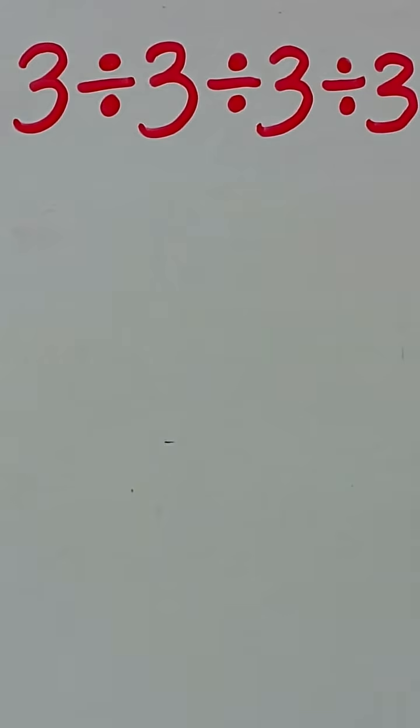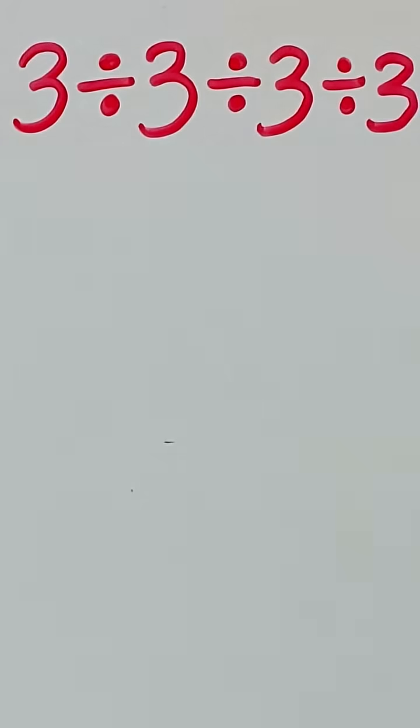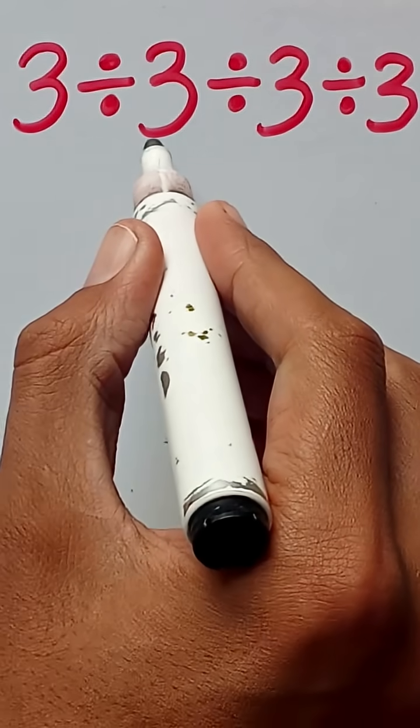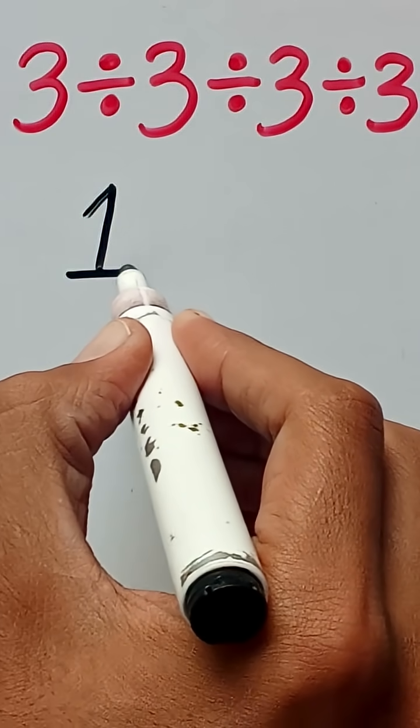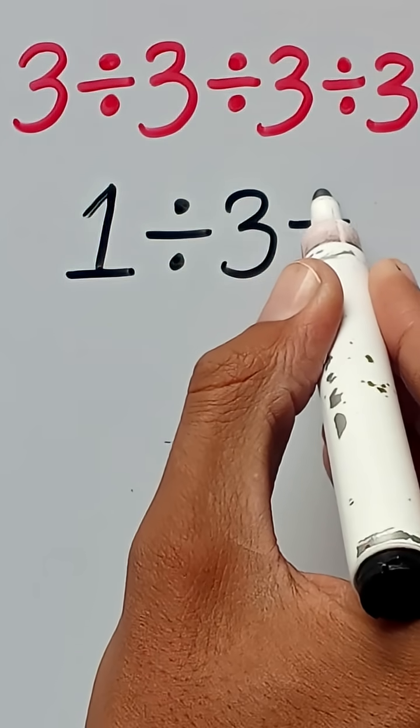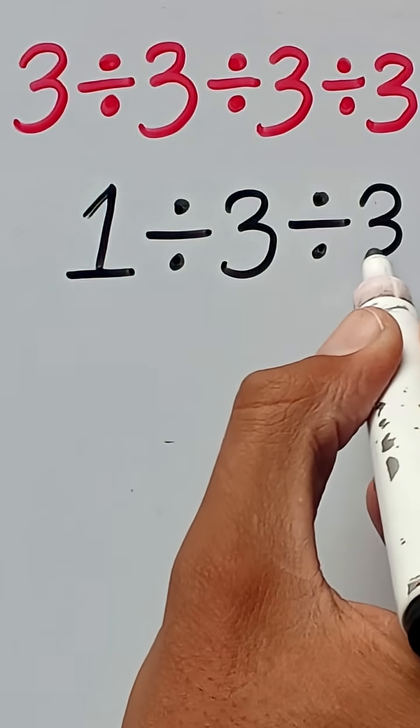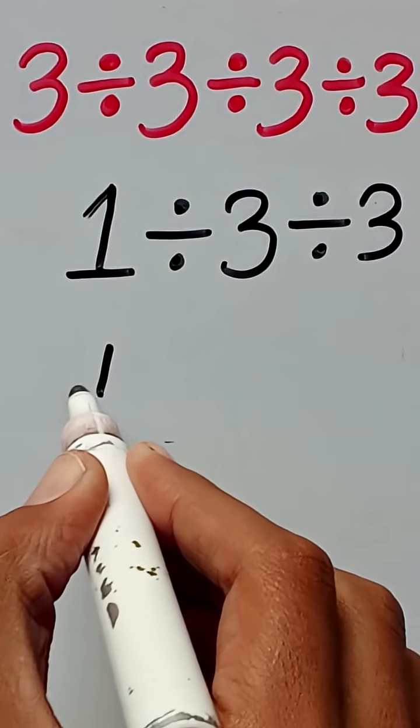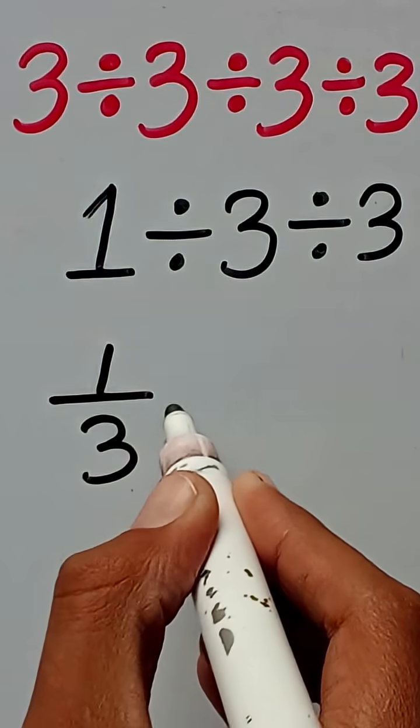in an expression there is more than one division, then we solve it from left to right. So, 3 divided by 3 equals 1, divided by 3, divided by 3. 1 divided by 3 we can write as